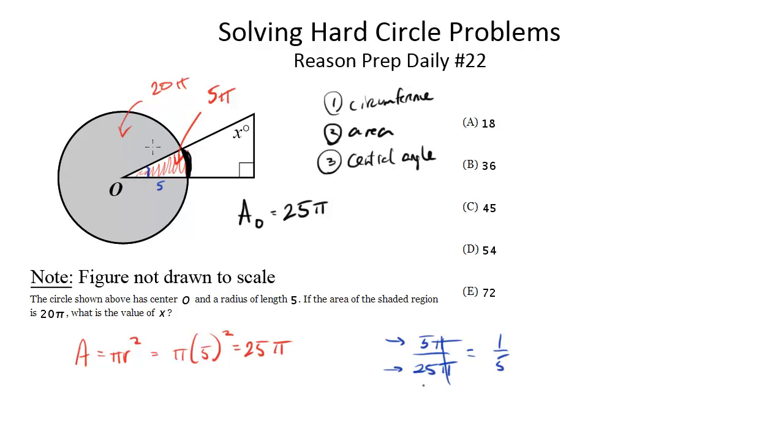So this wedge is 1/5 of the area. It's also 1/5 of the circumference. Notice figure is not drawn to scale. This doesn't look like 1/5, and that's because, yes, the figure is not drawn to scale. It's meant to look not like it's 1/5 of the circle. But it's 1/5 of the area. It's 1/5 of the circumference, and it's 1/5 of the central angle.